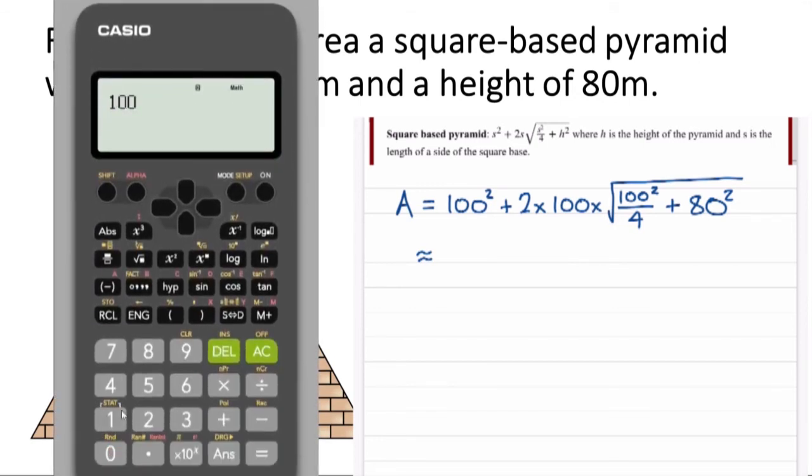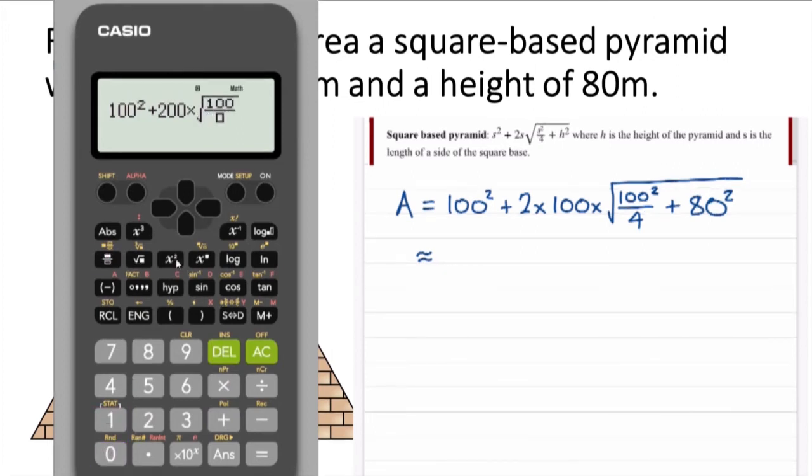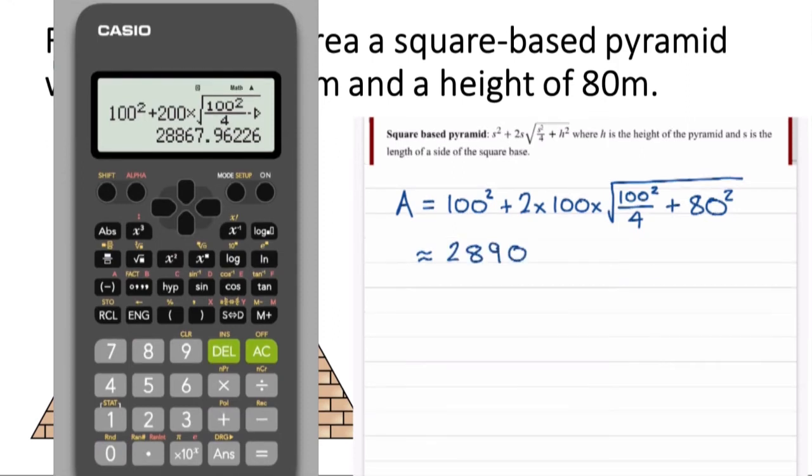A hundred squared plus two lots of a hundred, which I can do in my head as two hundred. Save a bit of calculator power there, typing in the simple answers. A hundred squared divided by four. I could probably work at that as well. And add on the eighty squared, giving us a number that goes on because of that square root sign. It's another irrational number it looks like. So let's round it off to twenty eight thousand nine hundred square meters. And that is three significant figures because I've rounded it.